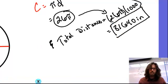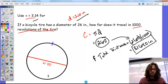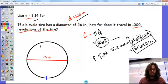And again, just thinking that if we know that the distance around this is 26 pi, which is about 81.64. So if we know the distance around this is 81.64, well then, if we go around once, then we just travel 81.64.